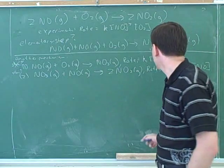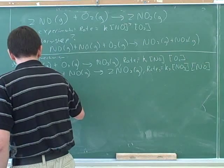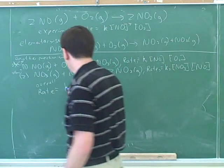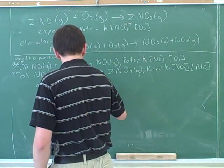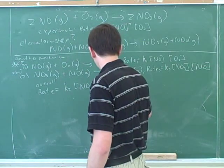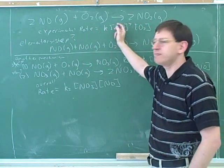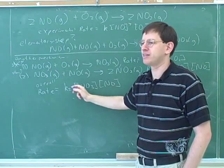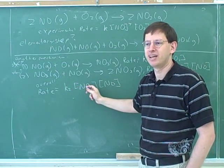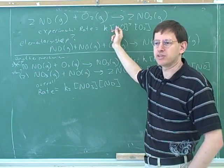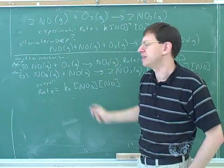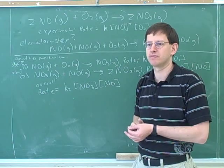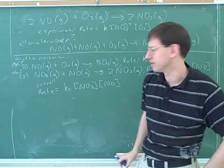If step 2 were the slow step, what would be the overall rate expression? K2 times NO times NO3. Now, that doesn't seem to match the experimental data, but we can't be too hasty. The reason is this has a problem that makes it difficult to consider: it includes an intermediate. And a rate expression would never include an intermediate anyway. So we haven't given this a fair test yet. We have to get rid of the intermediate before we can fairly test whether it matches the overall rate expression. That's the technical skill we need to learn here.